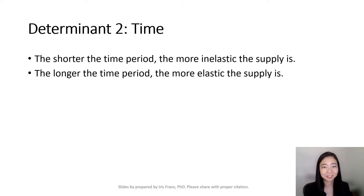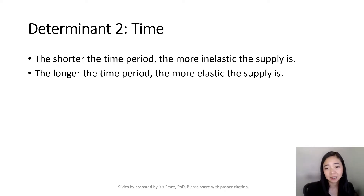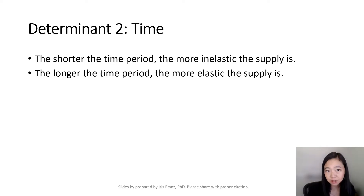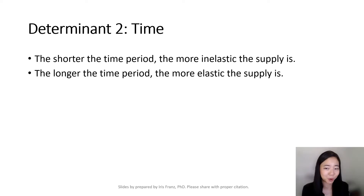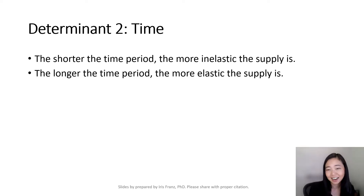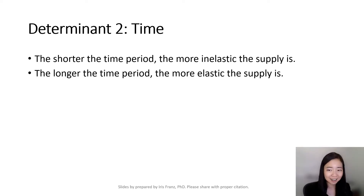The second determinant is time. The shorter the time period, the more inelastic your supply. The longer the time period, the more elastic your supply. Why is that? Because time allows you to produce more, and time also allows you to cut production. Therefore, the more time you have, the more elastic your supply is.